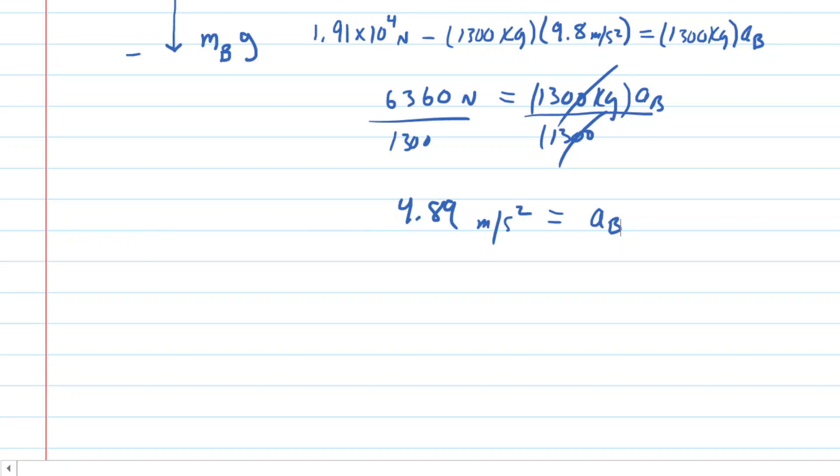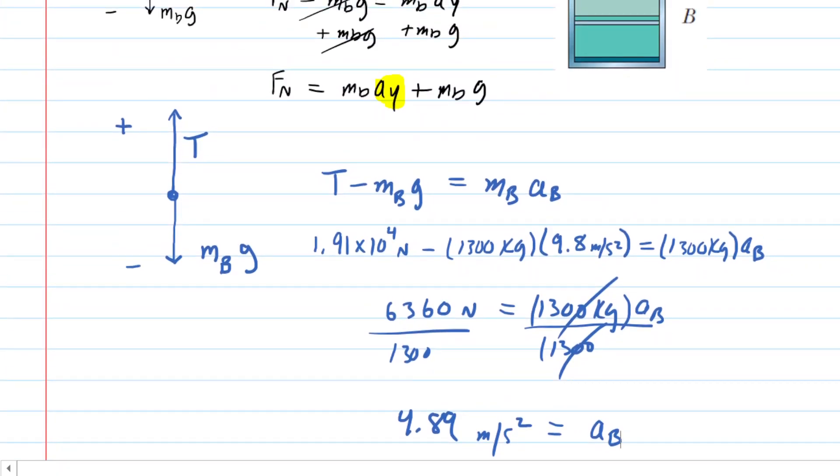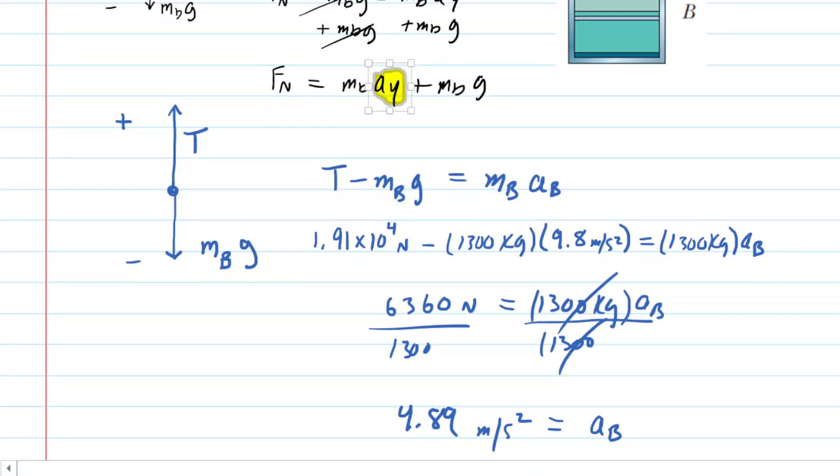But now remember the secret to the question: once we have the acceleration of cab B, we can plug that value in for the acceleration of the box of catnip because the box of catnip is accelerating at the same rate.